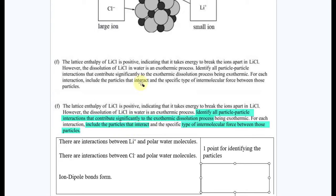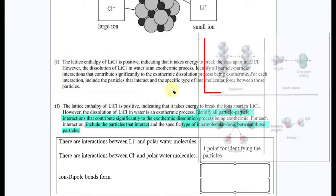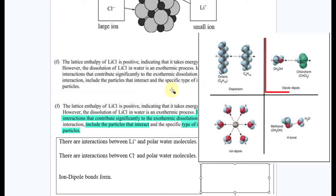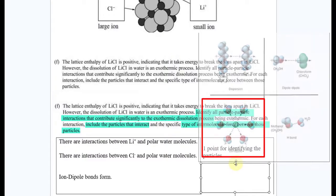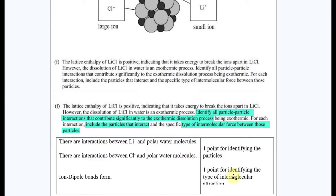The type of intermolecular force between these particles. Remember, our intermolecular forces are London dispersion forces, dipole-dipole, hydrogen bonding, and ion-dipole. That's an easy one to identify because you've got ions and, of course, dipoles. So, we get one point for that, and you've got this pretty well taken care of.